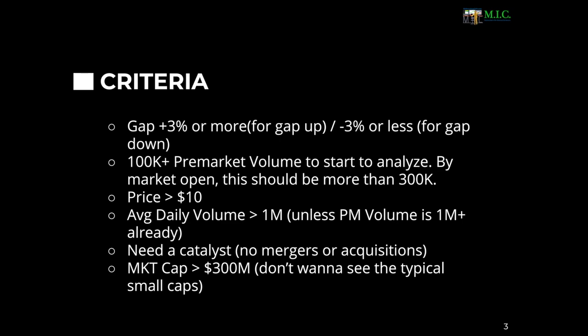Here is my criteria. I did the scanner video — I hope you all have seen that. The criteria is this: a gap plus or minus three percent. This means that I don't really care about trading with the gap, I just want to see it gap. The gap creates volatility, and that's why I look for this. So plus or minus three percent — three percent or more for a gap up, minus three percent or less for a gap down.